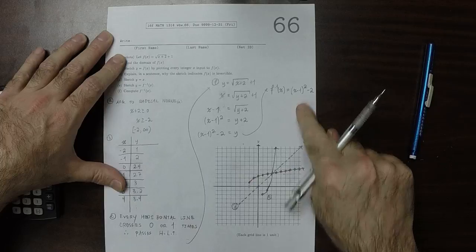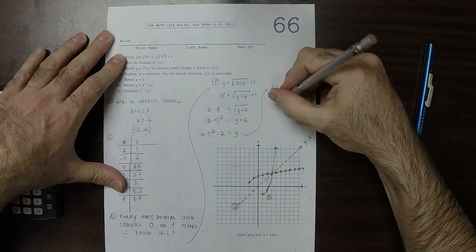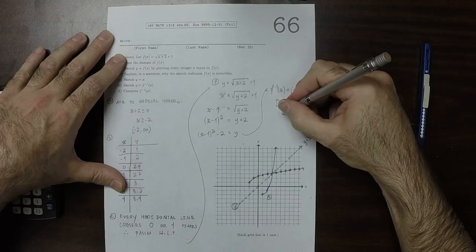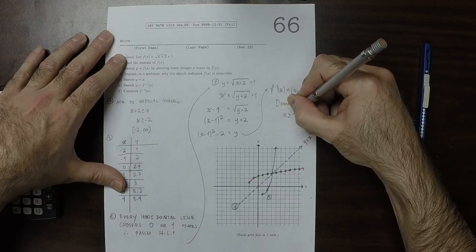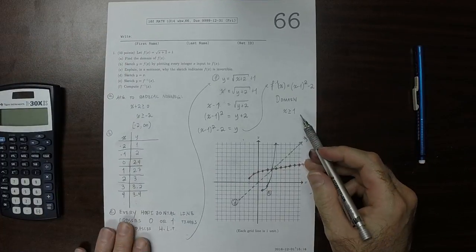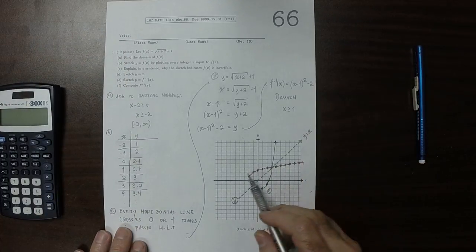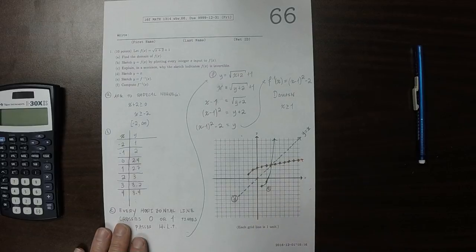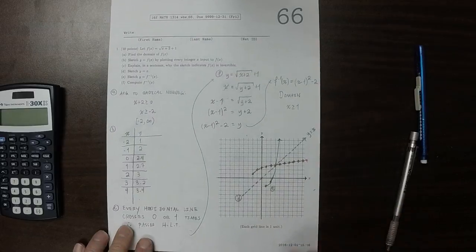And we need to note that the domain is X greater or equal to 1. And the reason why that's the domain is because the range of the original function was 1 to infinity.